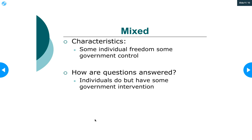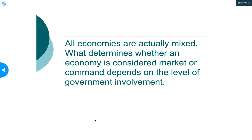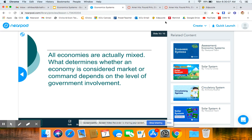This is why a completely free market economy can't exist — there are just too many things that could go wrong. All economies are mixed. What determines whether an economy is considered market or command depends on the level of government involvement. If you have a friend who says they're socialist, they are not saying the government should be in charge of everything. And if someone says they hate socialism, it doesn't mean they're purely free market. Everyone's kind of in the middle — it's called compromise. Alright, those are the notes. If you have any questions, let me know.